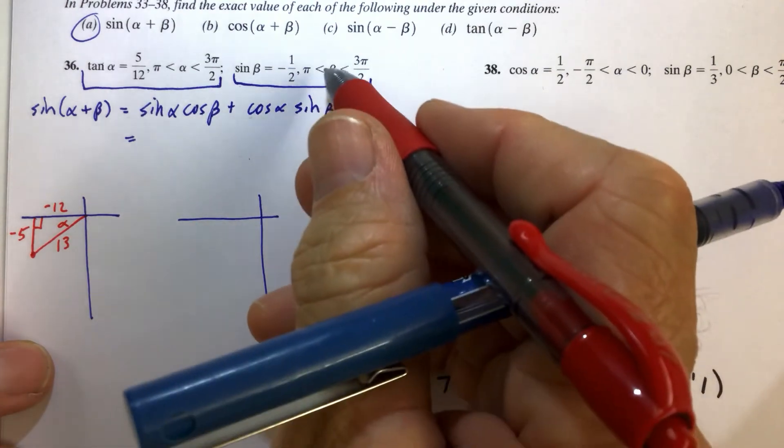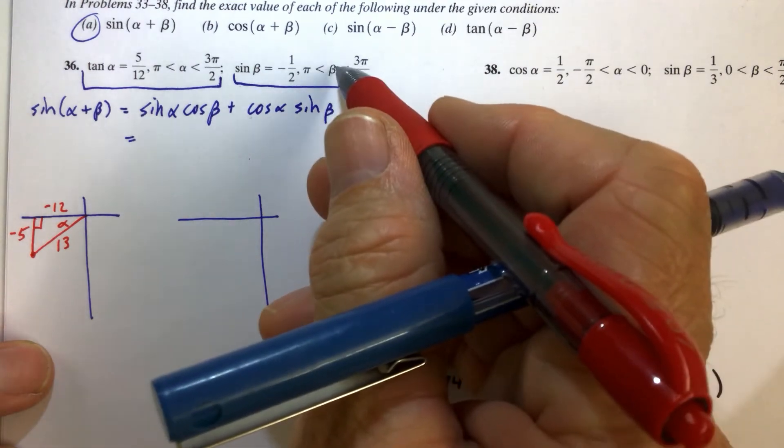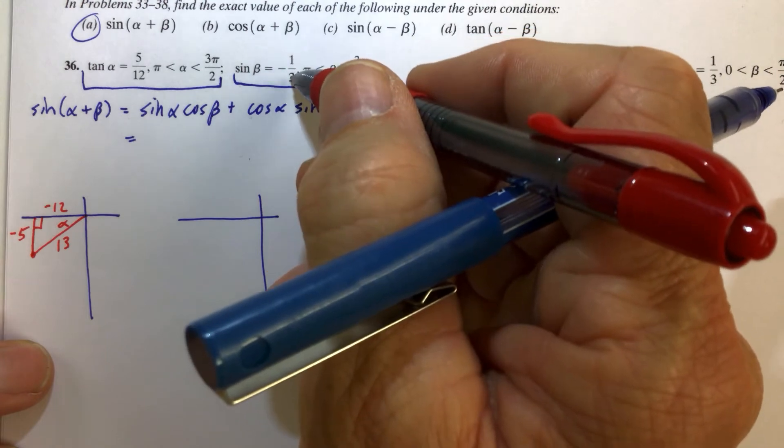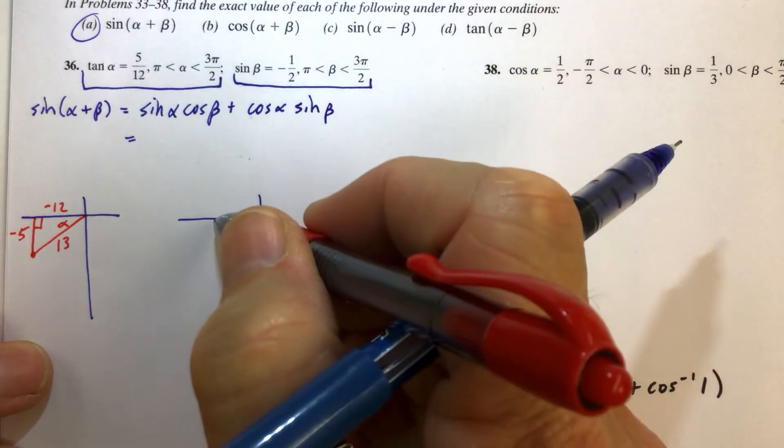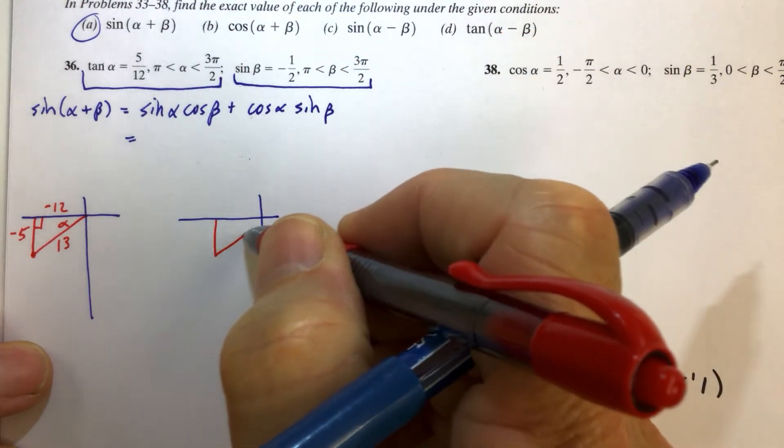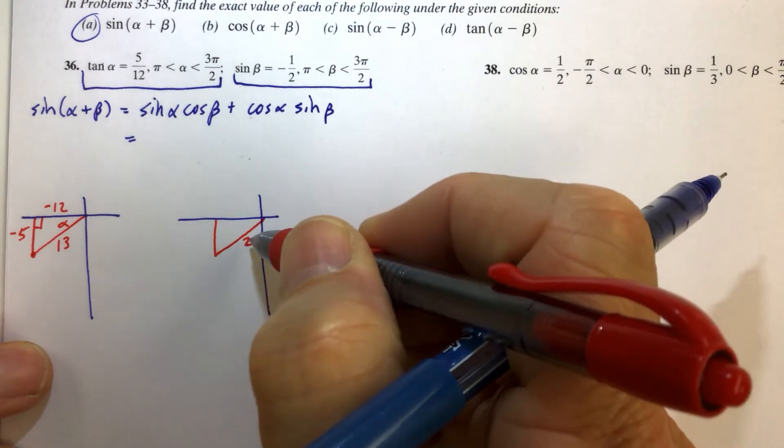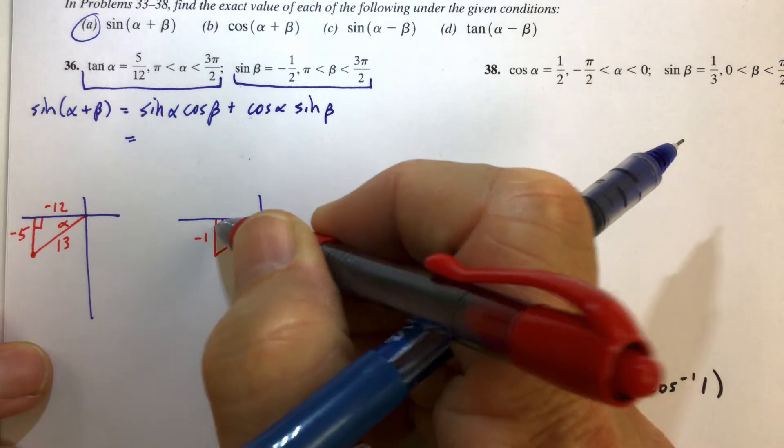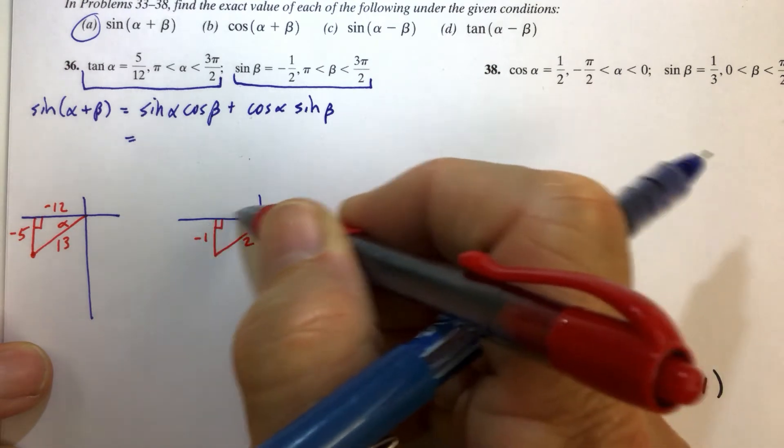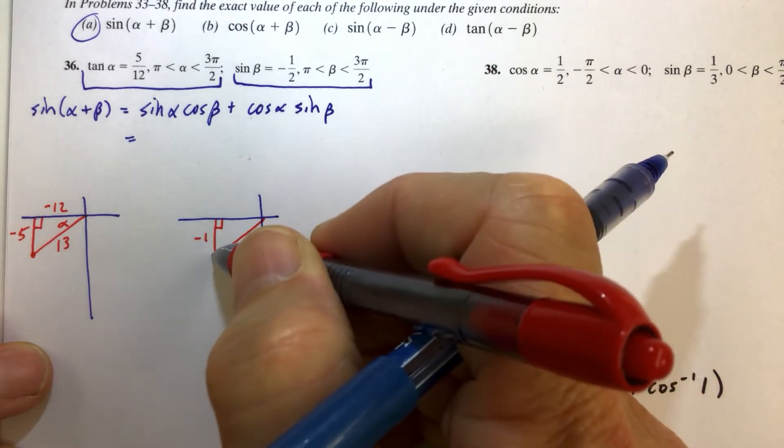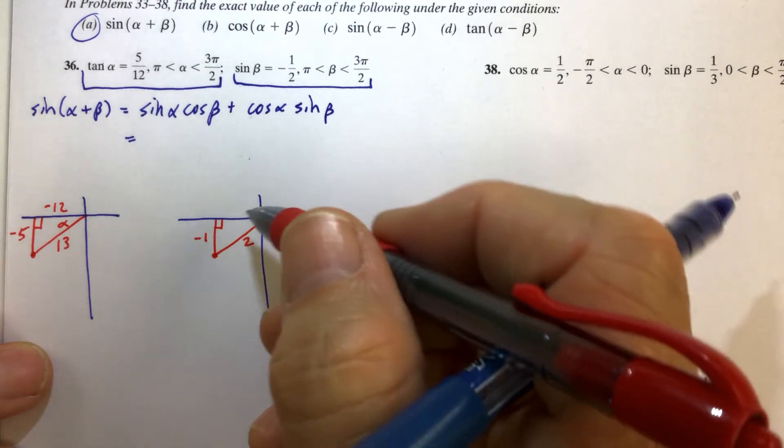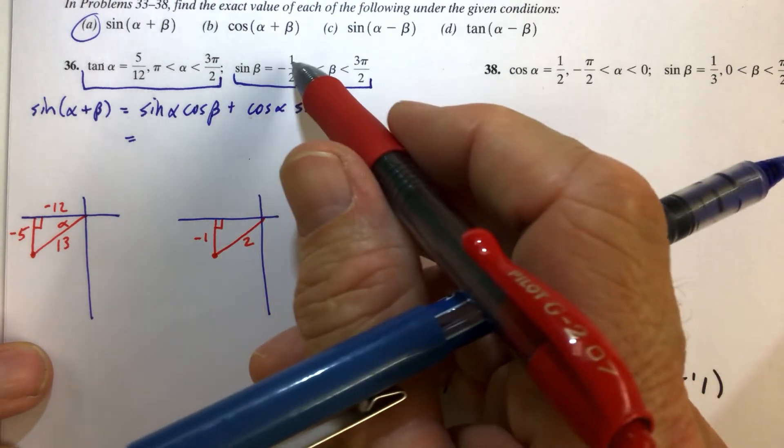And then our beta, again, also in the third quadrant, sine of beta being the opposite over hypotenuse. Now the opposite leg over hypotenuse, the hypotenuse is always going to be a positive number. And again, thinking about these legs, the lengths of the legs as negative numbers representing the coordinates of that point right there, all we have to do is figure out, well, sine equals negative 1 half.